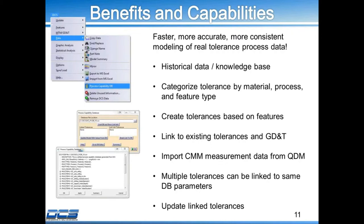Finally, multiple tolerances can be linked to the same database parameter. For instance, one tolerance in the database — you can choose all different tolerances in your model to mimic that exact same tolerance. And then if you have all these blank tolerances, you have one button that you can update all of them together.